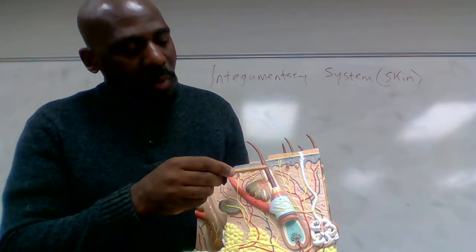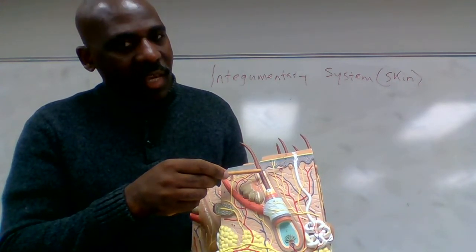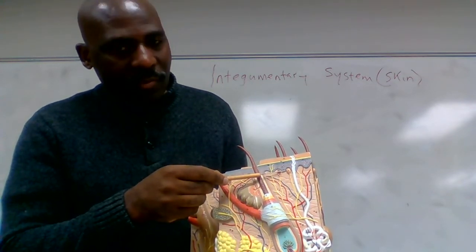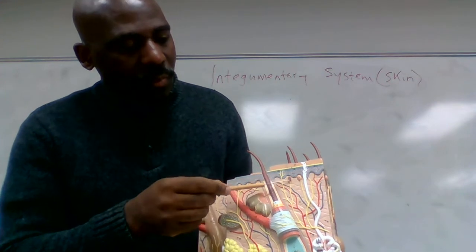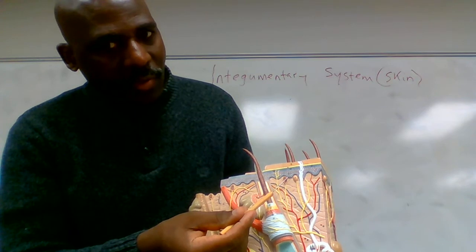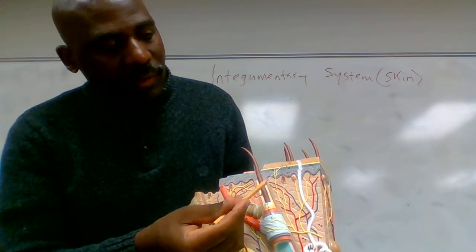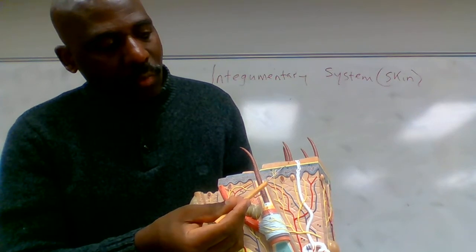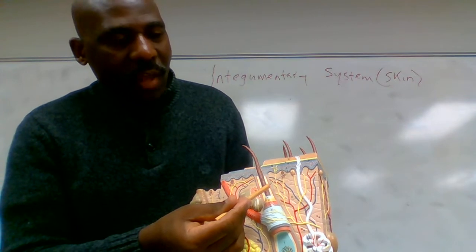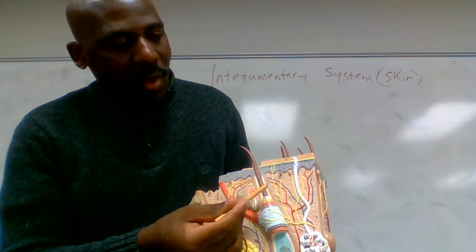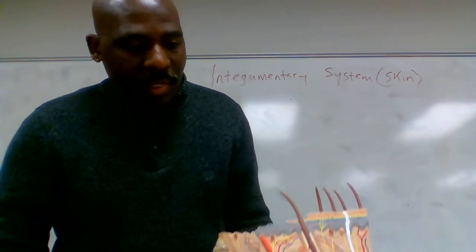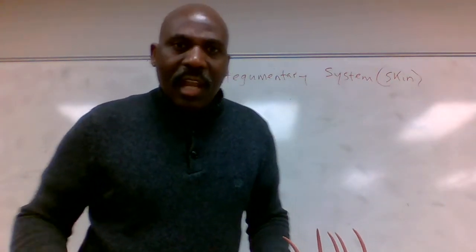Now let's take our attention to the upper layer of the skin, which we call the epidermis. The epidermis has five sub-layers. This is sub-layer number one — the innermost — then number two, number three, number four, and number five.